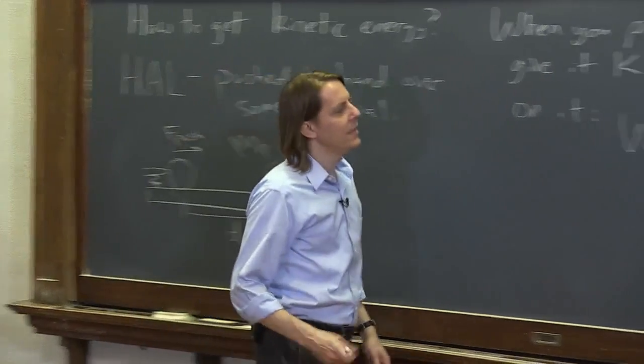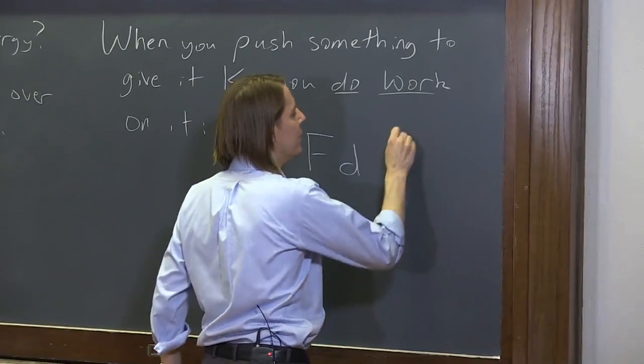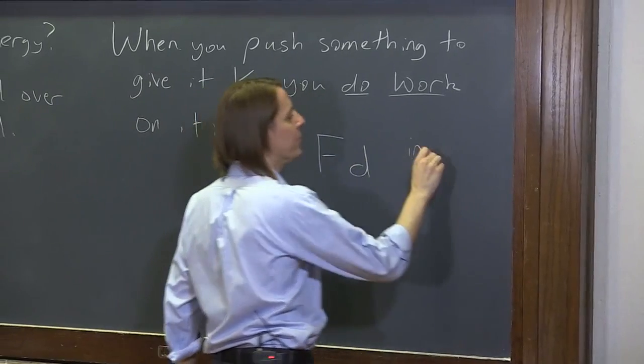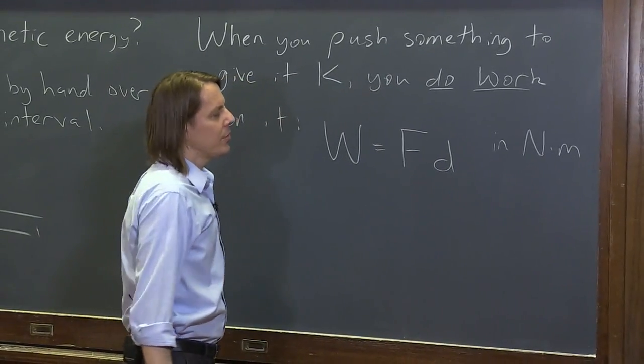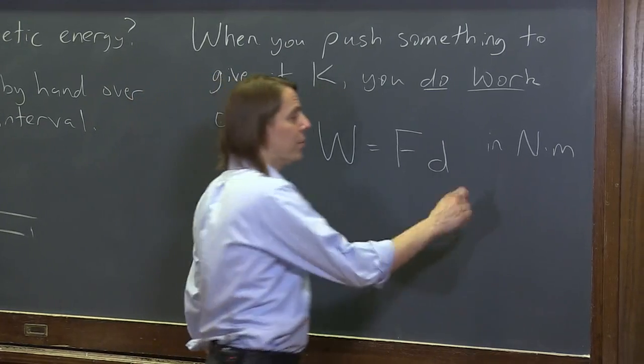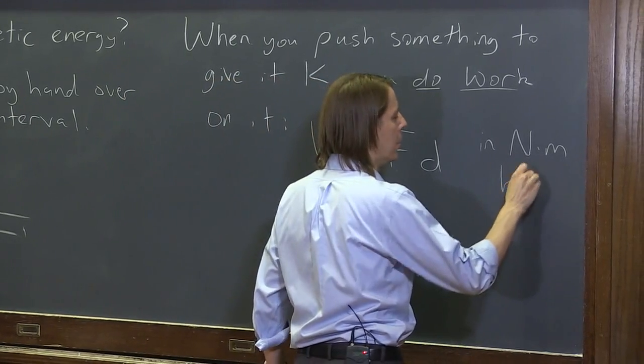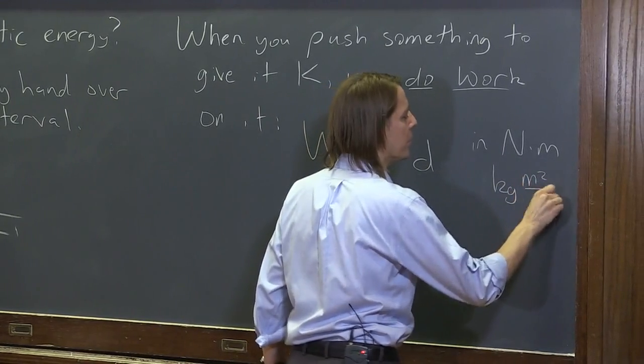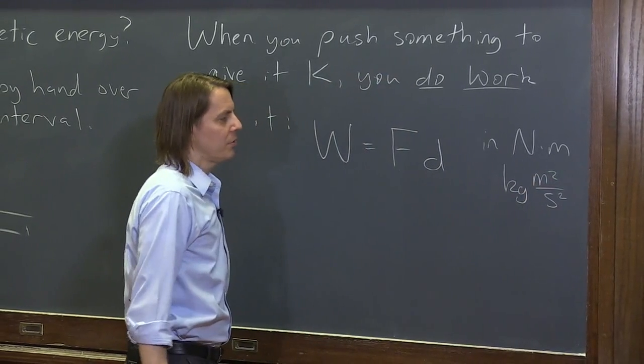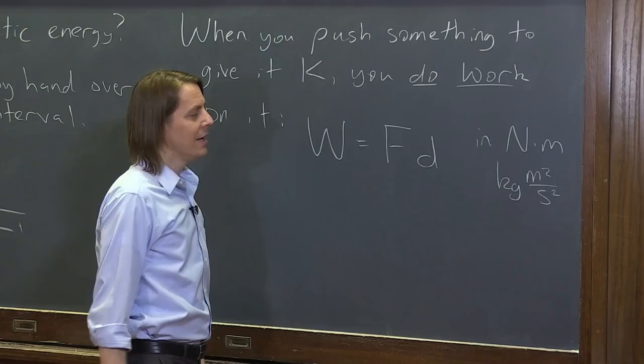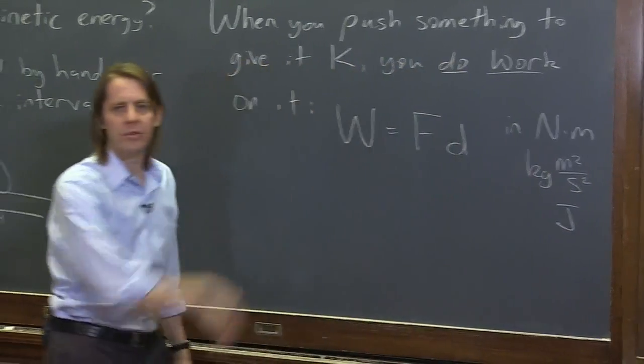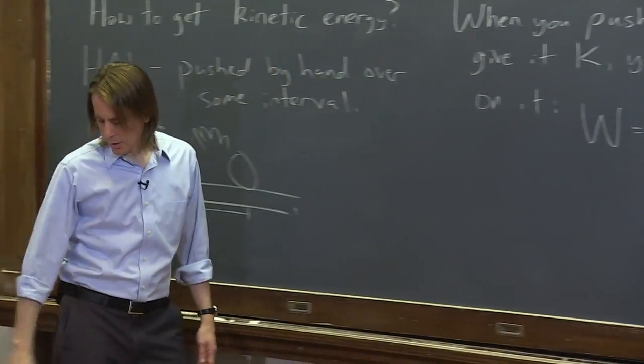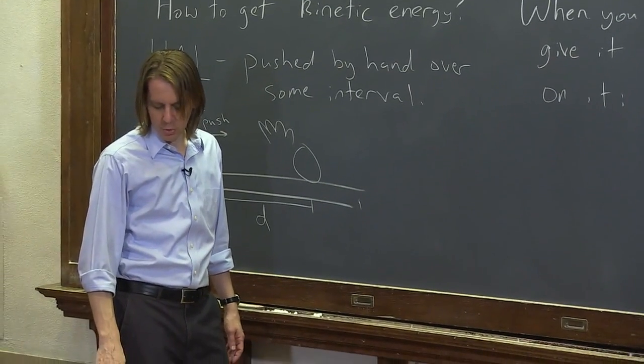It's in the units of newtons times meters - one way to write it is a newton-meter. You could say a newton is a kilogram meter per second squared, so you could call it a kilogram meter squared per second squared. Or this has a special name because it's the unit of energy, and it's called a joule. So one J - those are all the same thing: newton-meter, kilogram meter squared per second squared, or joule.